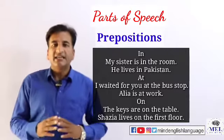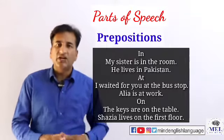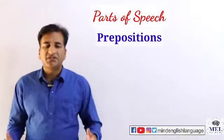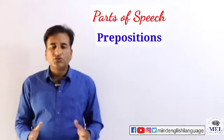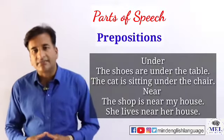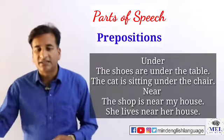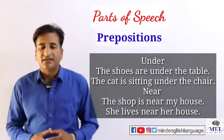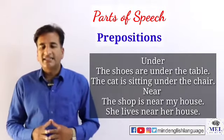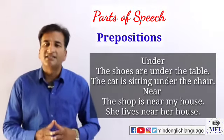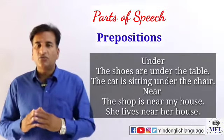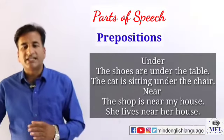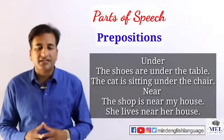اب ہم دیکھتے ہیں کہ 'under' جو ہے وہ کیسے preposition of place کے طور پر use ہوتا ہے۔ 'The shoes are under the table' — جوتے table کے نیچے ہیں۔ 'The cat is sitting under the chair' — بلی جو ہے وہ کرسی کے نیچے بیٹھی ہوئی ہے۔